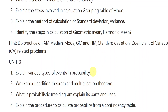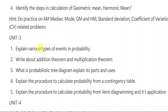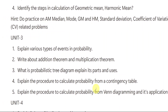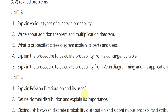From unit number three, the first important question is: Explain various types of events and probability. Second: Write about the addition theorem and multiplication theorem. Third: What is a probability tree diagram — explain its parts and uses. Fourth: Explain the procedure to calculate probability using a Venn diagram and its applications. These are the five important questions from unit number three.